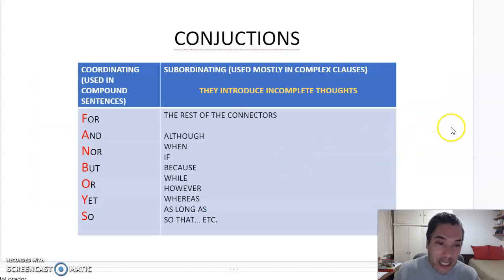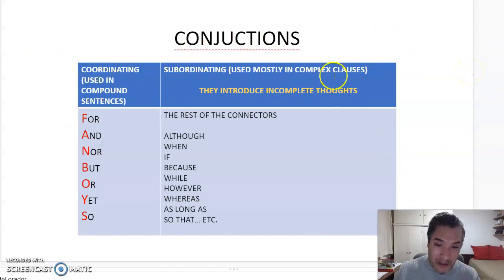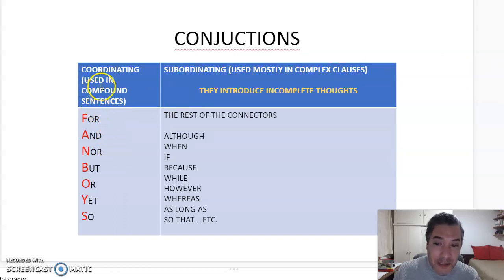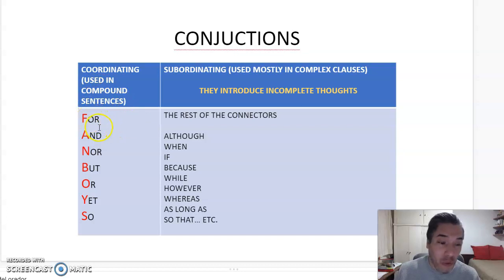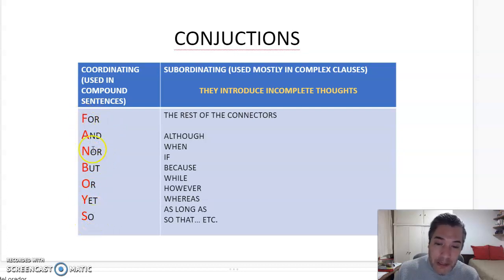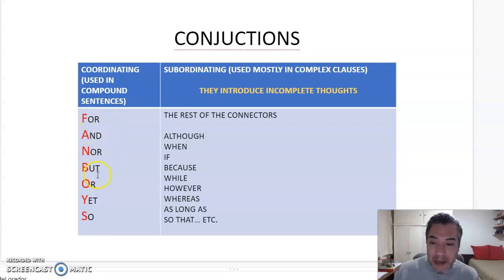We are going to deal with conjunctions now. For coordinating conjunctions, we study the FANBOYS rule. FANBOYS stands for: For, And, Nor, But, Or, Yet, So.